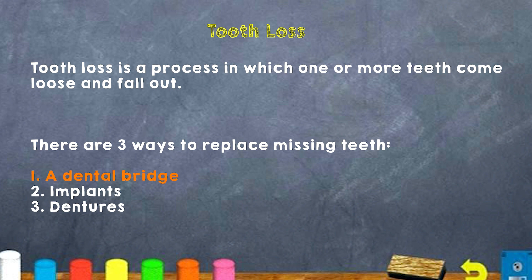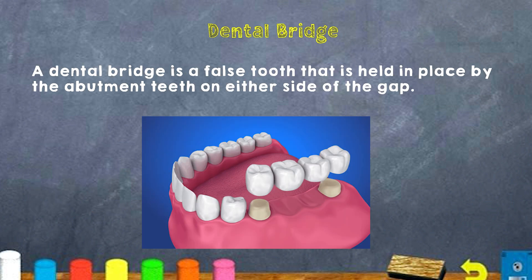A dental bridge is a false tooth that is held in place by the teeth around it on either side of the gap. You can take a look at the picture of a dental bridge being inserted in someone's gum — the false tooth is placed there and holds onto two of your actual teeth.